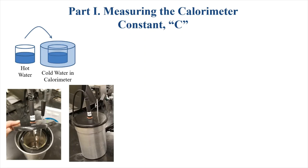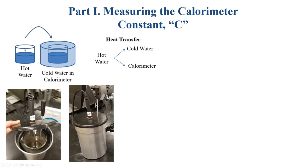Because the calorimeter will absorb some heat from a reaction, we have to measure its calorimeter constant — big C. The first part of this experiment is to calibrate the calorimeter by measuring C, so we know how much heat it will absorb when we run our reactions. You'll also notice there's a stirrer that goes in to mix the reagents, and a temperature probe that connects to the computer through the Vernier system. The way we measure the calorimeter constant is by mixing hot water and cold water together and using the heat transfer from the hot water to the cold water and the calorimeter to determine the amount of energy absorbed.